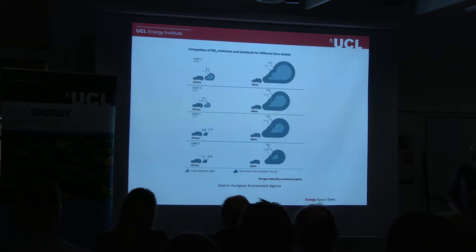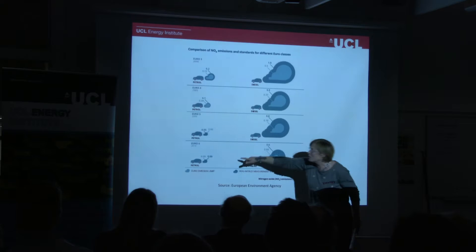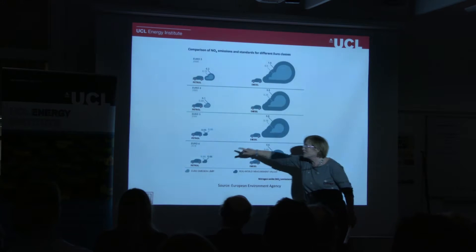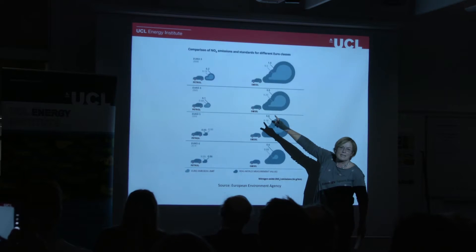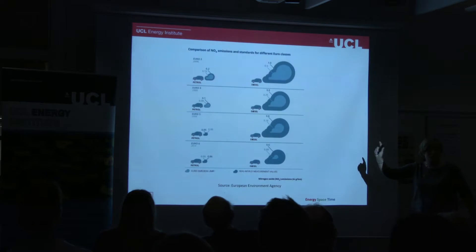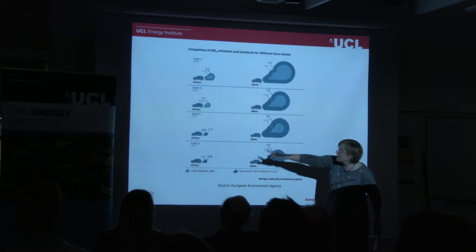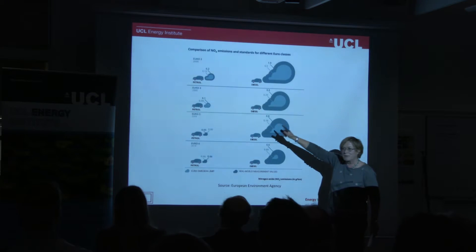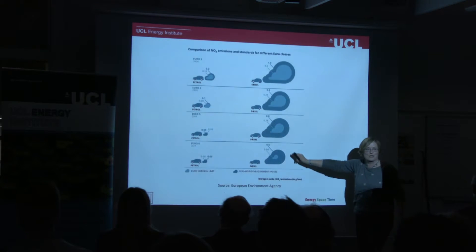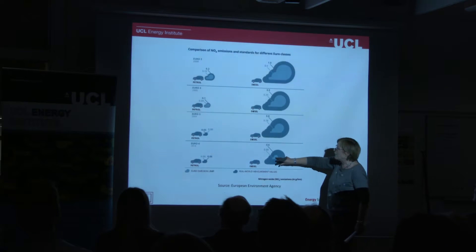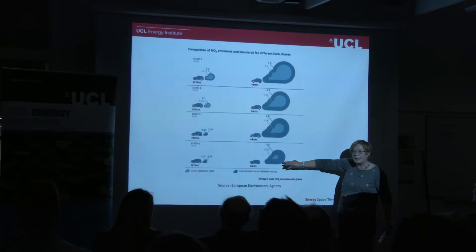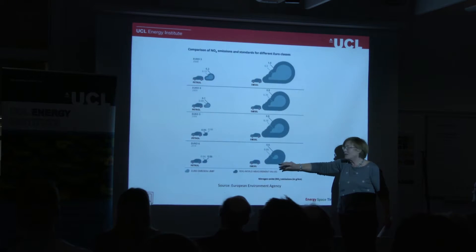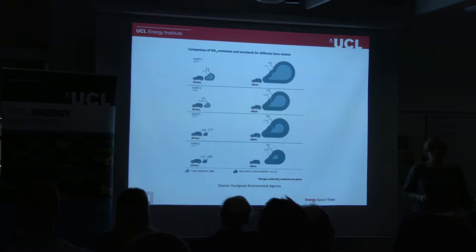One more slide, leading onto Paul's presentation. This is looking at emissions of NOx from different types of vehicles: Euro 3 at the top, Euro 6. Euro 3 was introduced in 2000, Euro 6 in 2014. Petrol on the left, diesel on the right. The light blue is the emission limit, the dark blue is real-world driving emissions results. On the petrol side, the difference between the emission limit and the real world is much smaller than for diesel vehicles. The limit value is always higher for diesel — so not only do they perform badly in the real world, but the limit value itself is much higher than for petrol.